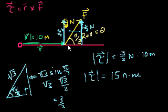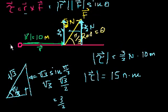But what if we wanted to know the direction? And that's where the cross product comes in. So what was the definition of the cross product? The cross product, r cross f, that is equal to magnitude of r times the magnitude of f times sine of the smallest angle between them